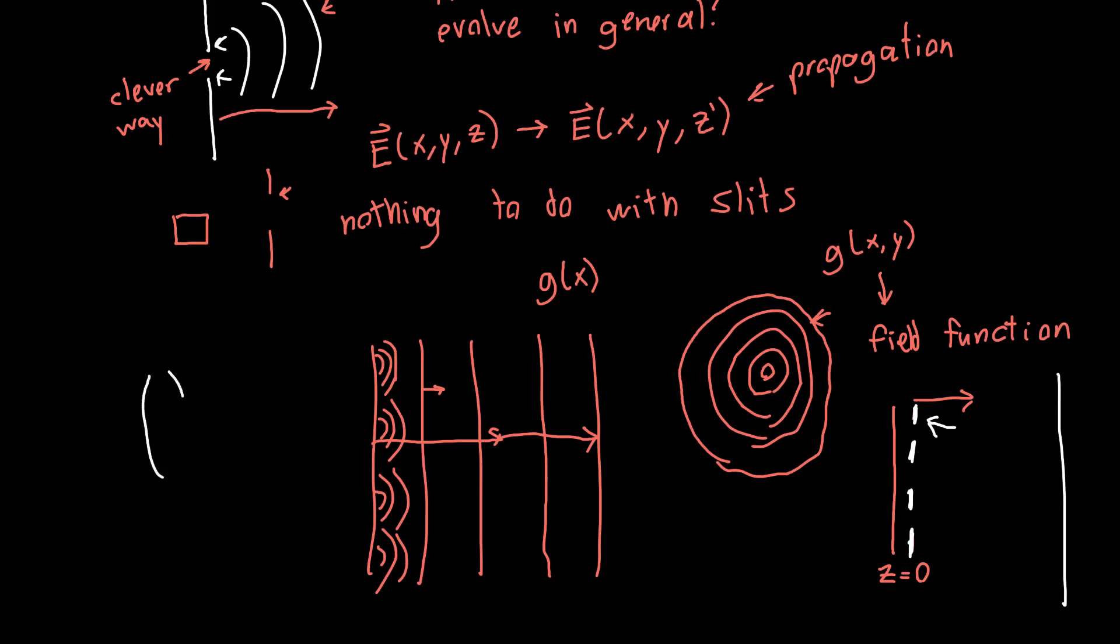But diffraction can tell us much more than how light behaves when it passes through slits. It can tell us how light behaves when propagating through lenses, when propagating through free space, then maybe we have an aperture, and then maybe something we're interested in measuring. So diffraction lets us describe entire optical systems, and really everything about how light behaves.